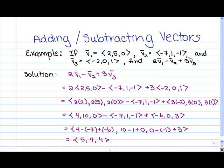Remember to be careful with the negative signs. When we have a negative in front of a vector, that negative applies to each component in the vector. If you prefer, you can think of vector subtraction as vector addition and multiplication by a scalar of negative 1 — subtracting a vector is the same as adding negative 1 times that vector. To recap: we performed the scalar multiplication, then simplified, then did the addition and subtraction component by component. Our final answer is the vector (5, 9, 4).